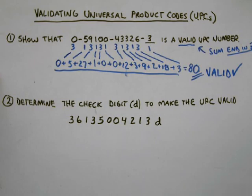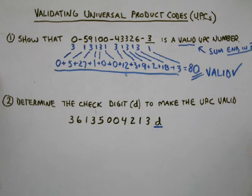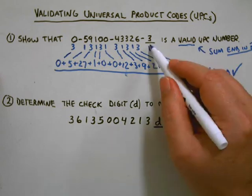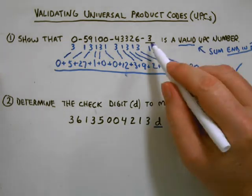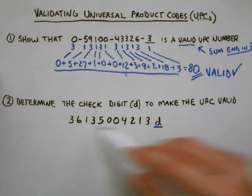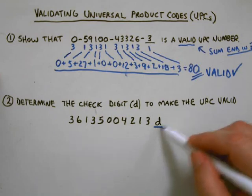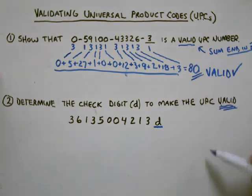Now here's a UPC code where we don't know what the check digit is. Remember, the final digit is the check digit number. In the top example it was 3 and it was given to us. In the bottom one it's not given to us, and we have to find a value that will make it valid — meaning that the sum ends in 0.